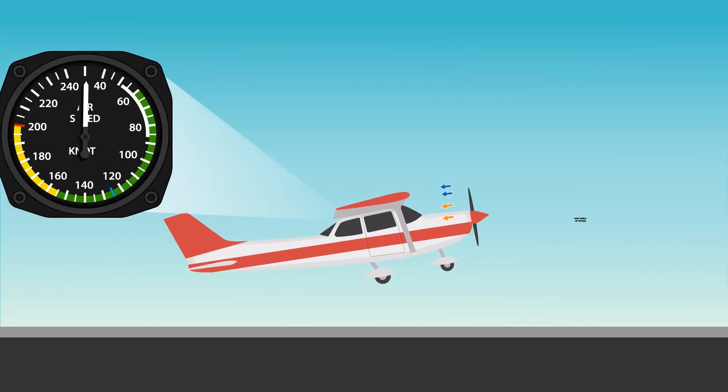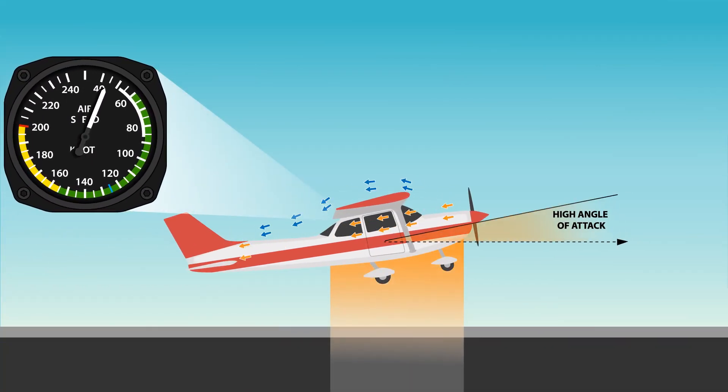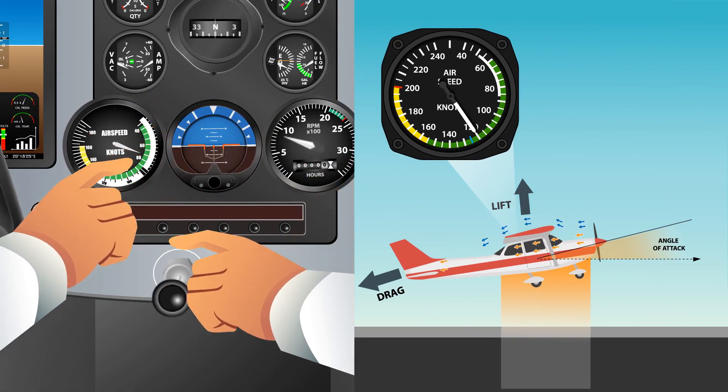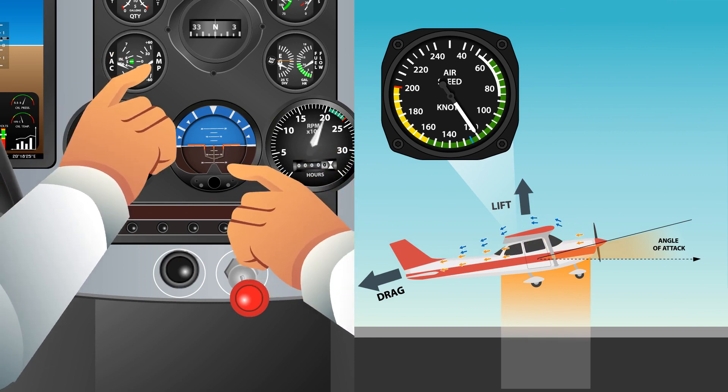If the AOA stays constant, a doubling of airspeed will quadruple the lift produced by the airfoil. However, with an increase in AOA, the wing produces more lift but also more induced drag, thus requiring more power to maintain a constant airspeed.